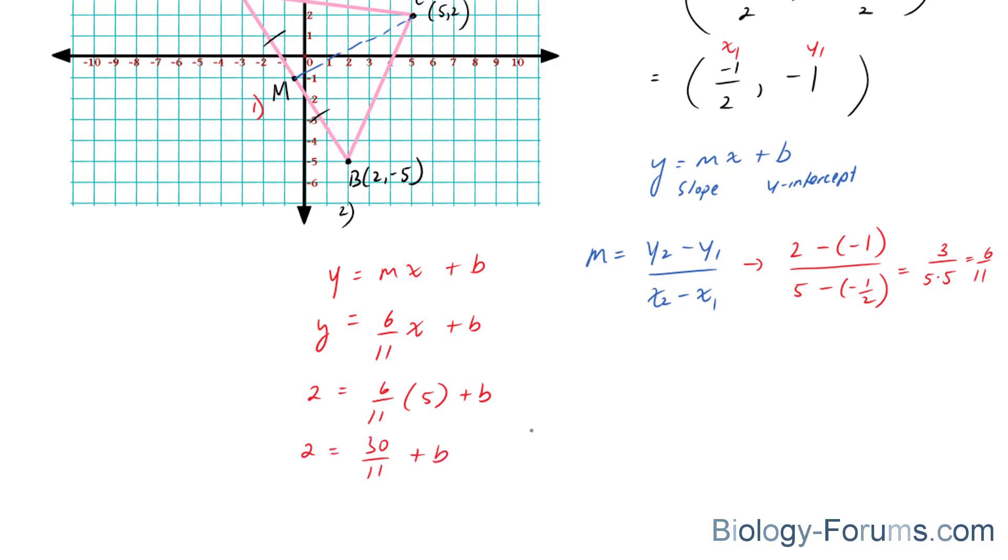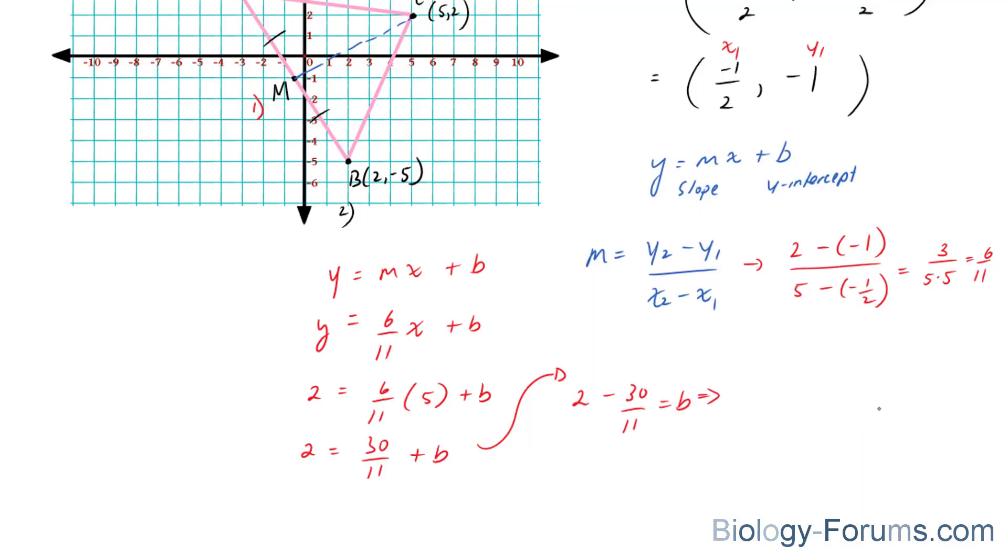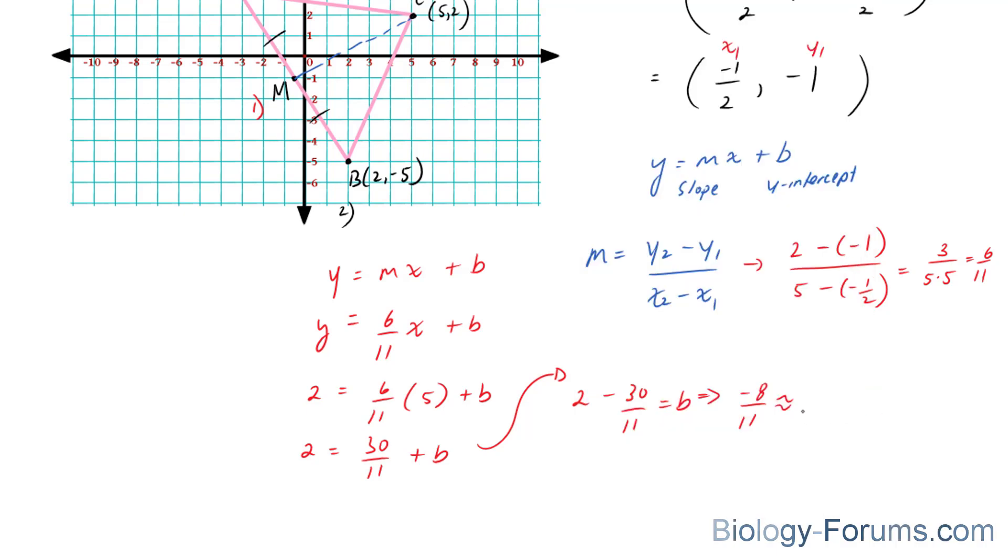And we're going to solve for b by bringing this term over to this side. And we end up with 2 minus 30 over 11 is equal to your b value. And that is equal to negative 8 over 11, which is approximately equal to negative 0.72.